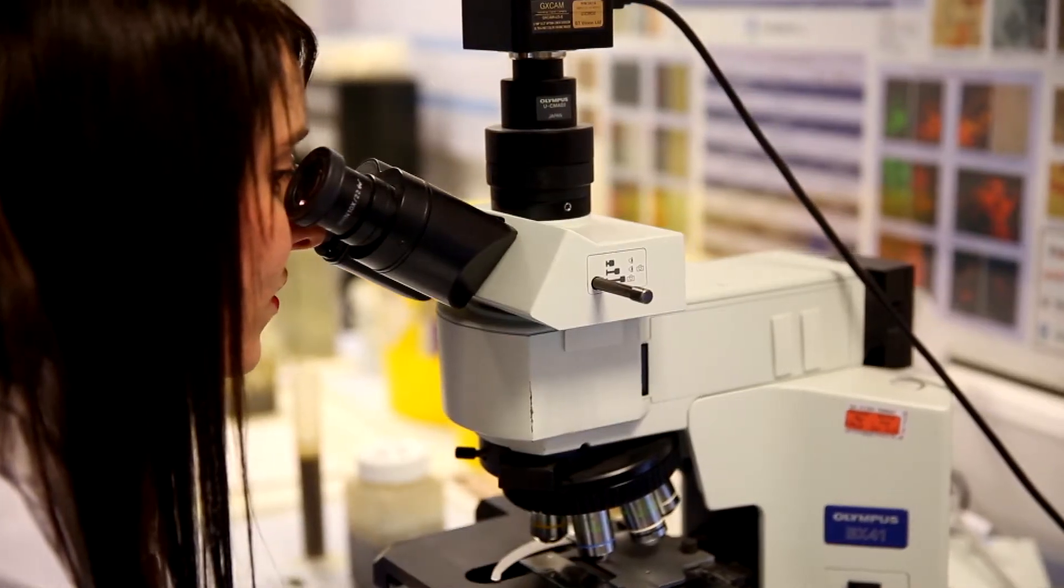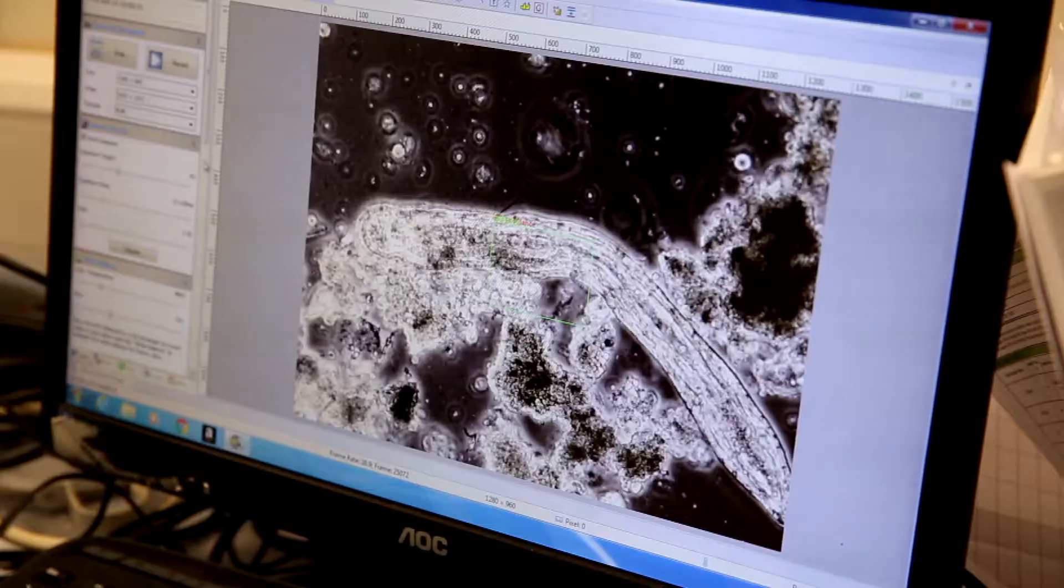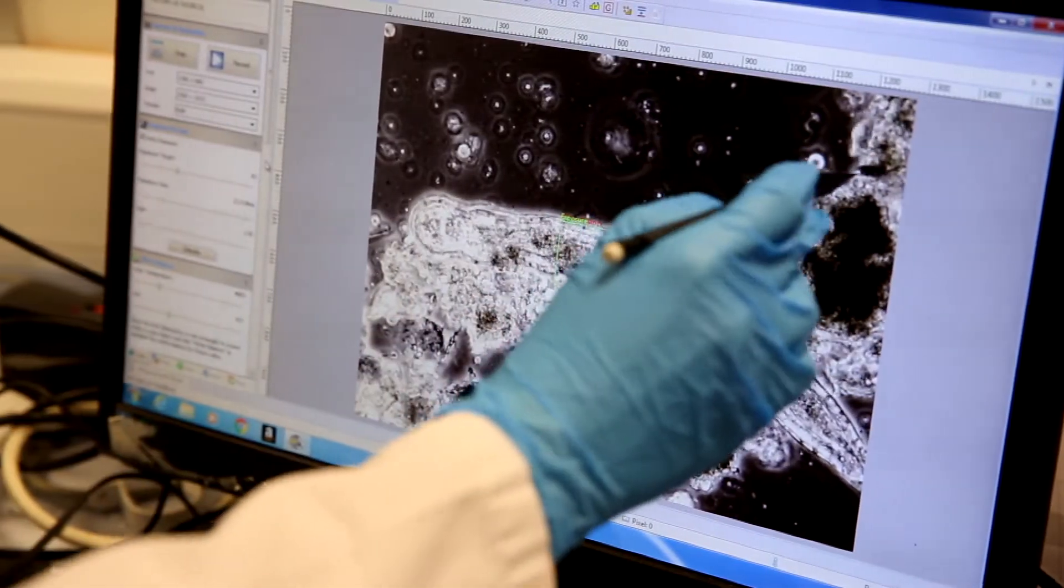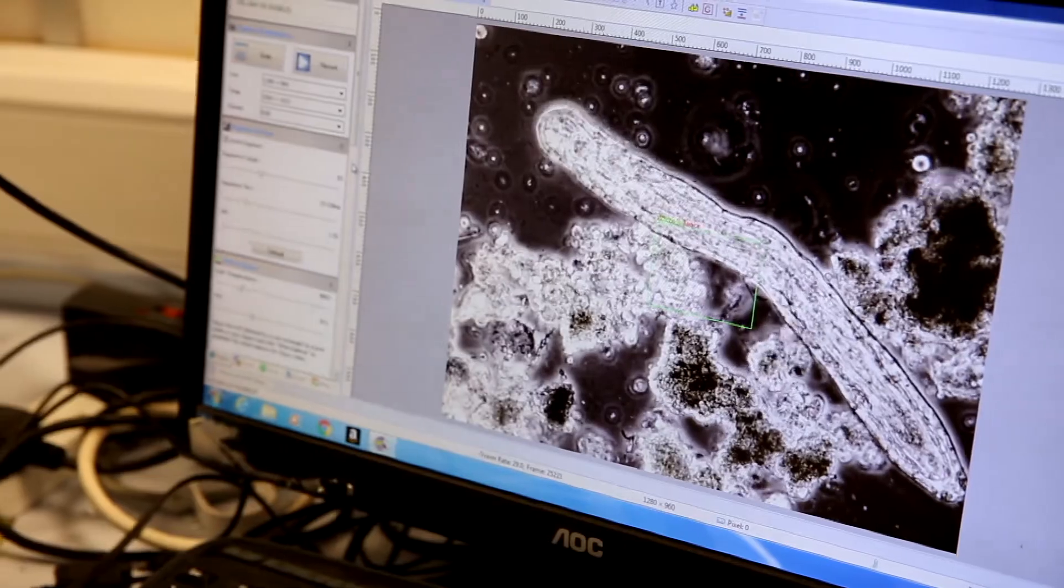Looking down the microscope is important, especially in identifying different indicator organisms which tell us how a plant is feeling and what actions we could take to improve its performance.